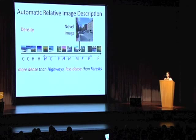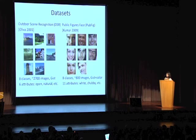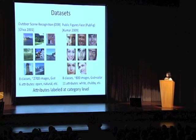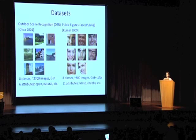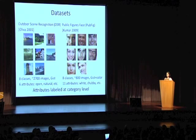We consider two datasets to evaluate our approaches. The first is the outdoor scene recognition dataset of Oliver et al., with eight classes and six attributes such as 'natural' and 'open'. The other is a subset of the PubFig dataset with eight categories and 11 attributes such as 'smiling' and 'chubby'. To train our relative attributes, supervision is provided at the category level — for example, coast is more open than forest — and we propagate this to the image level to train our ranking functions.